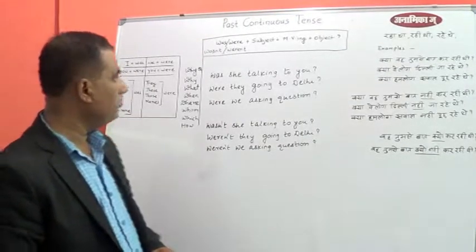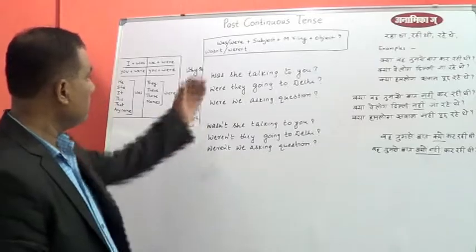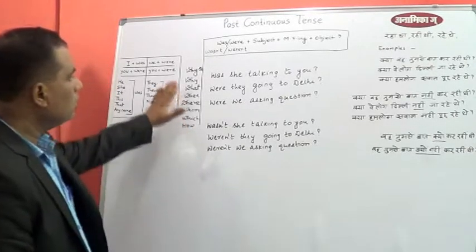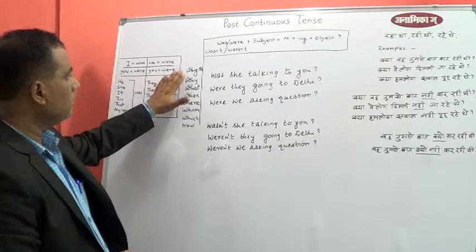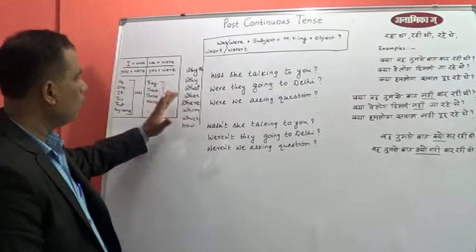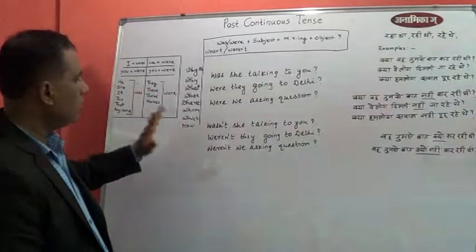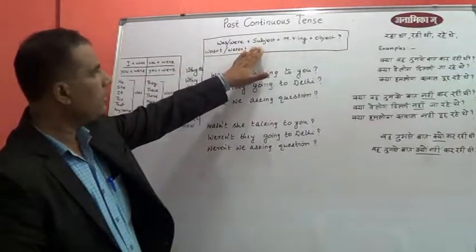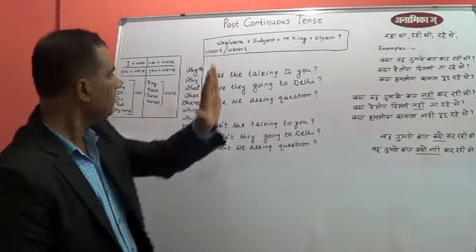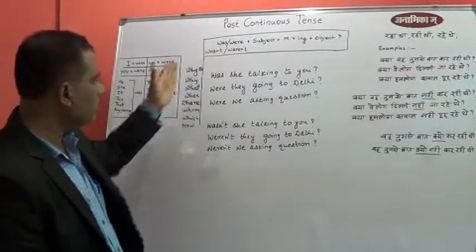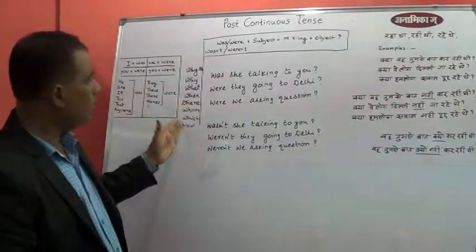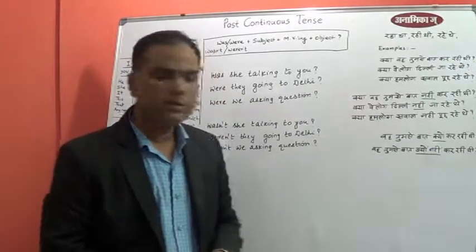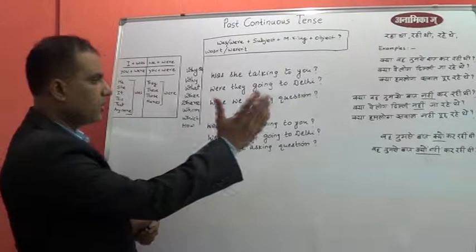Now let's see how to frame fact-finding questions, because there are many questions wherein we seek information. Those questions will start with WH-words — why, what, when, where, whom, which, how — and after that the structure will be very similar to the yes/no question we saw earlier. So with the help of this structure and these WH-words we will try to frame fact-finding questions.